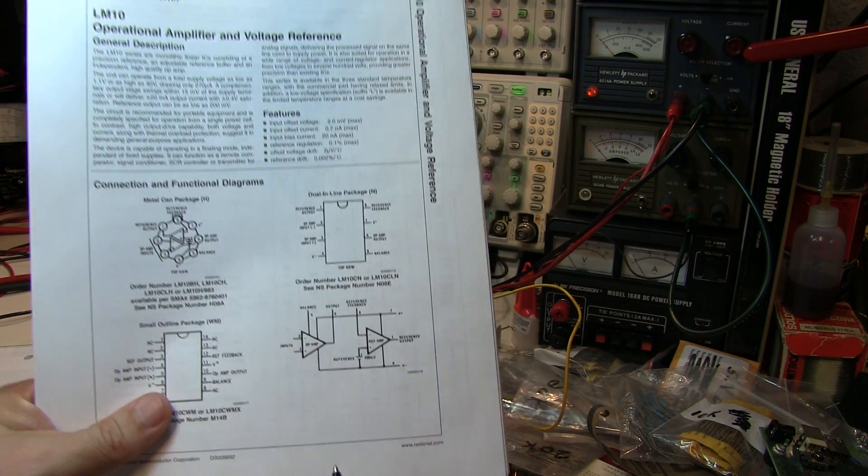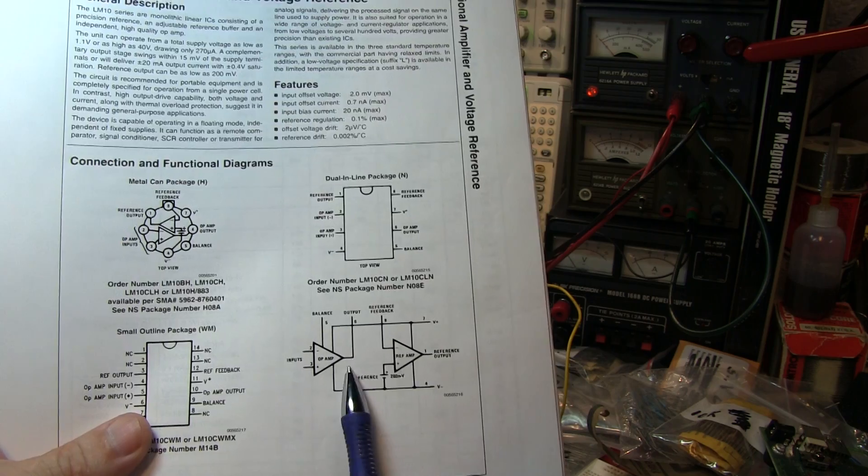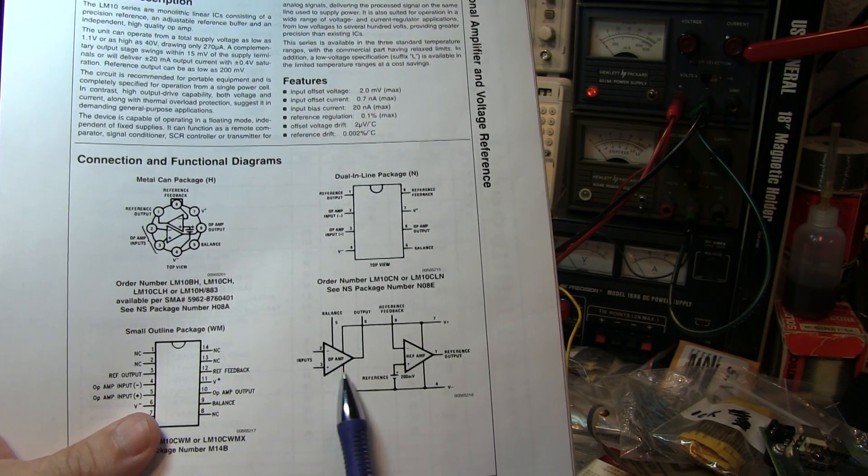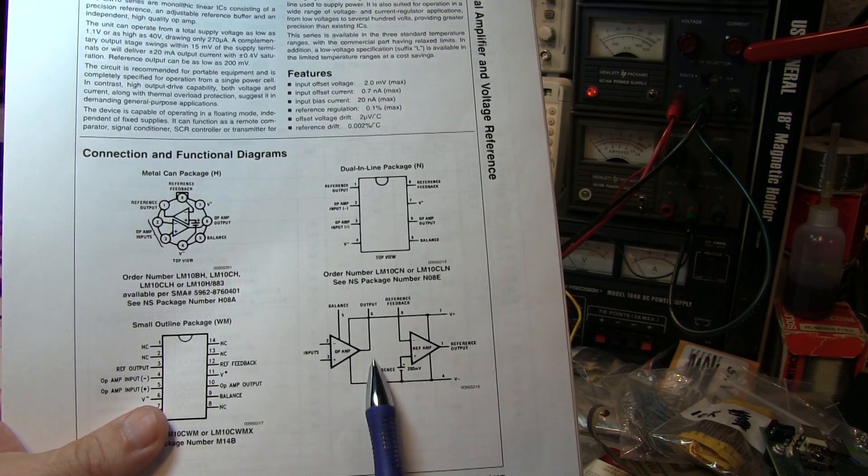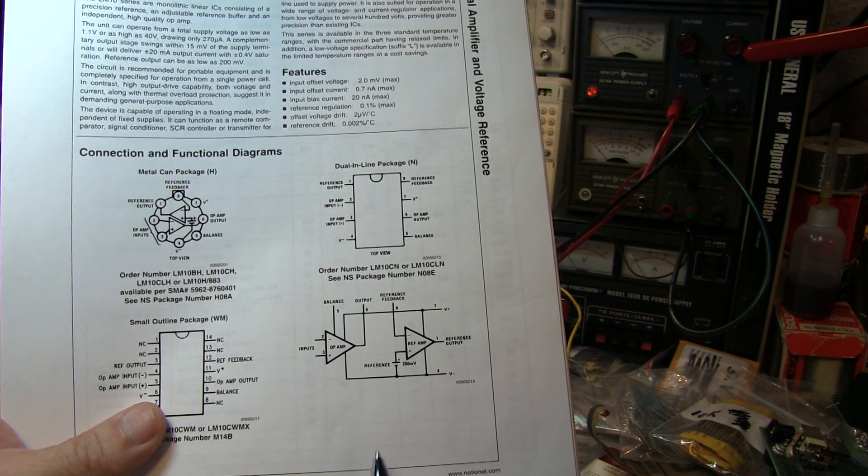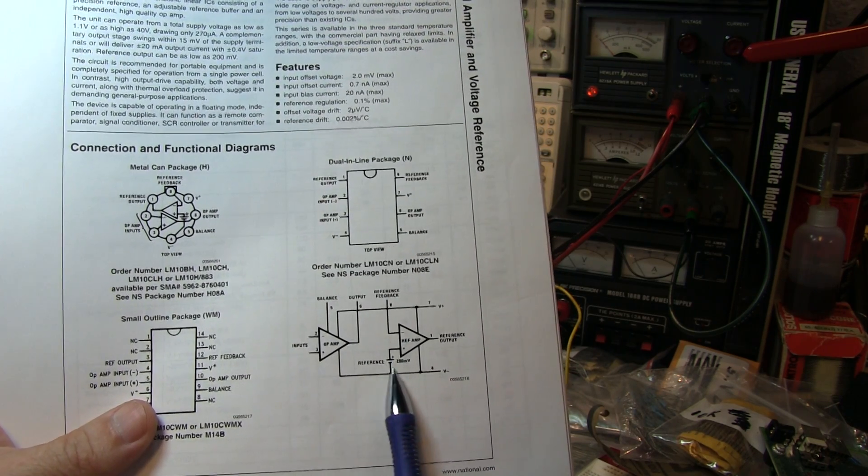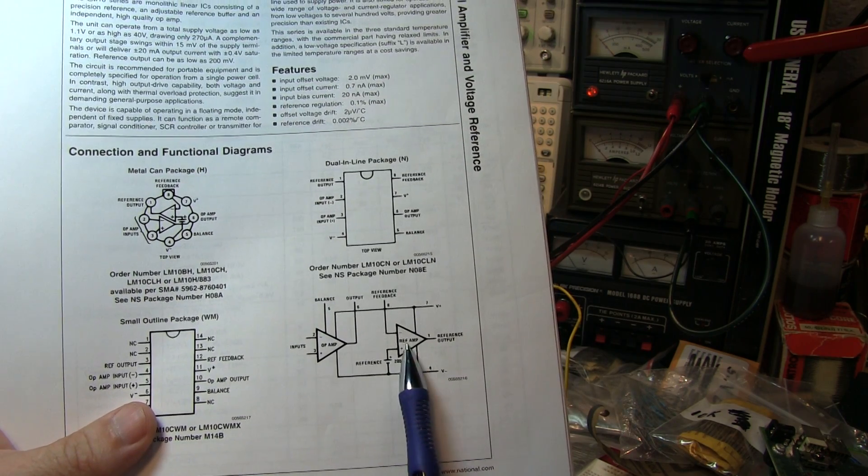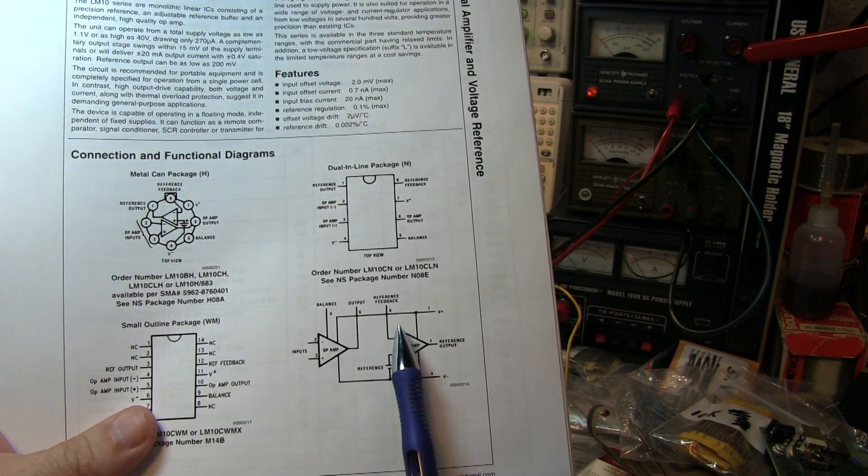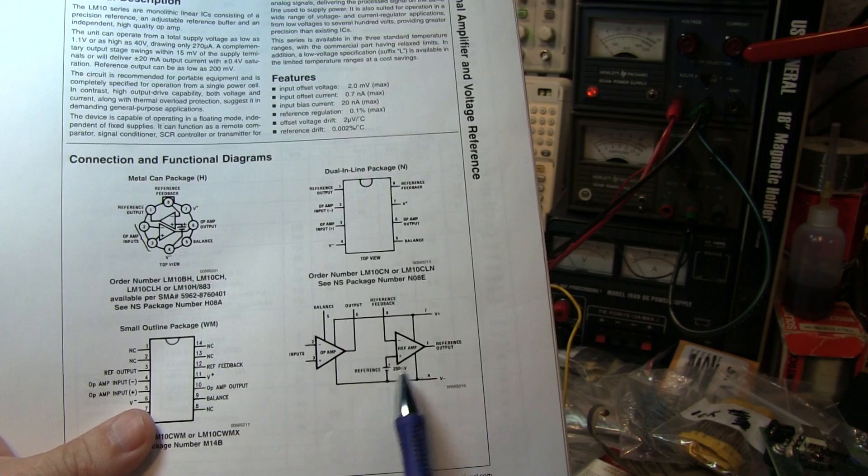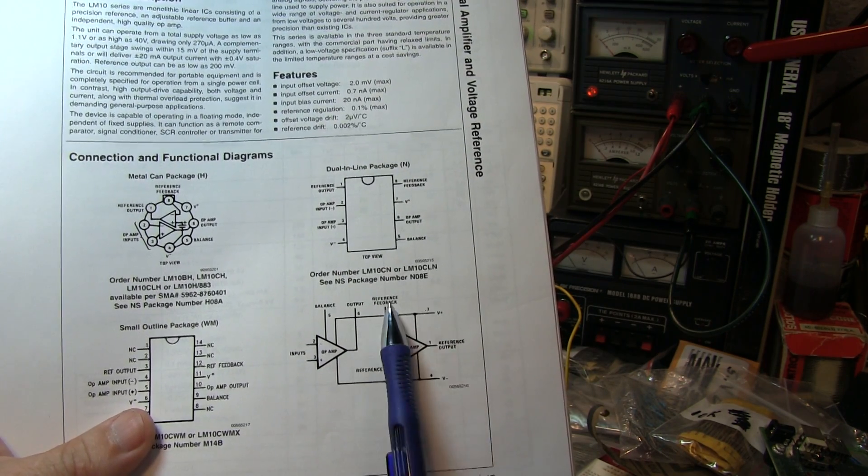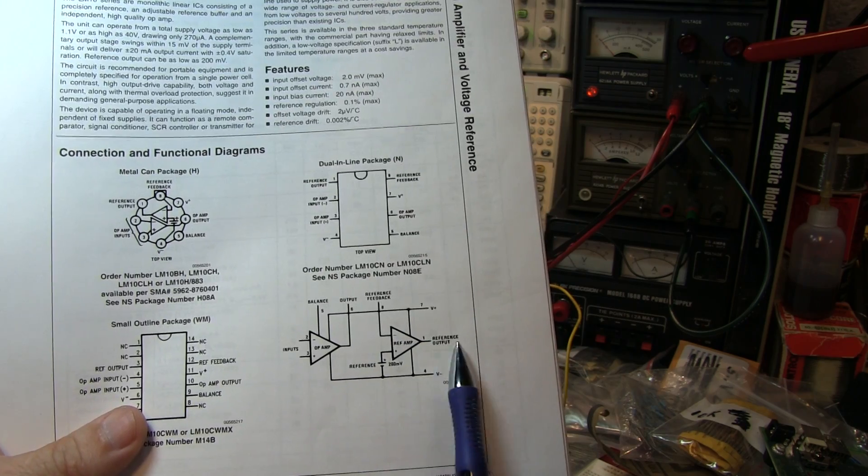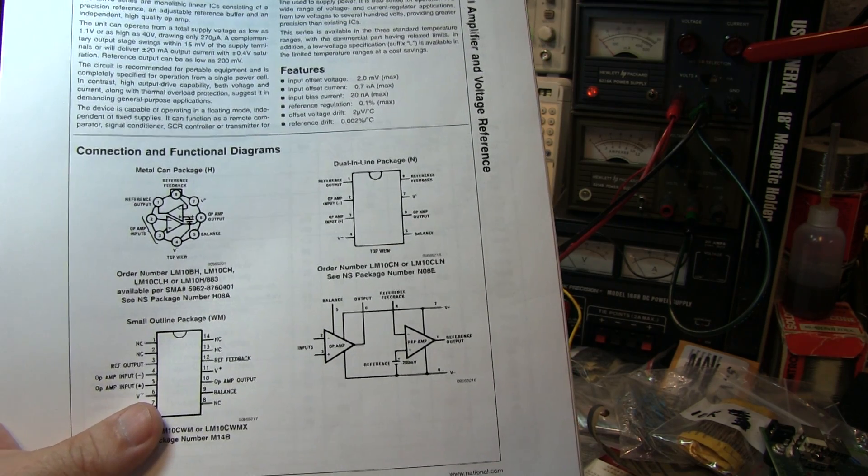You can see it's an operational amplifier and a voltage reference. So essentially inside the integrated circuit, we've got a pretty decent little low voltage op amp with close to rail-to-rail outputs on the output, and a built-in 200 millivolt reference, and a reference amp. So by connecting some feedback around here, we can adjust that reference to be whatever we want, or we simply can tie the output to the input and we have a buffered 200 millivolt reference.